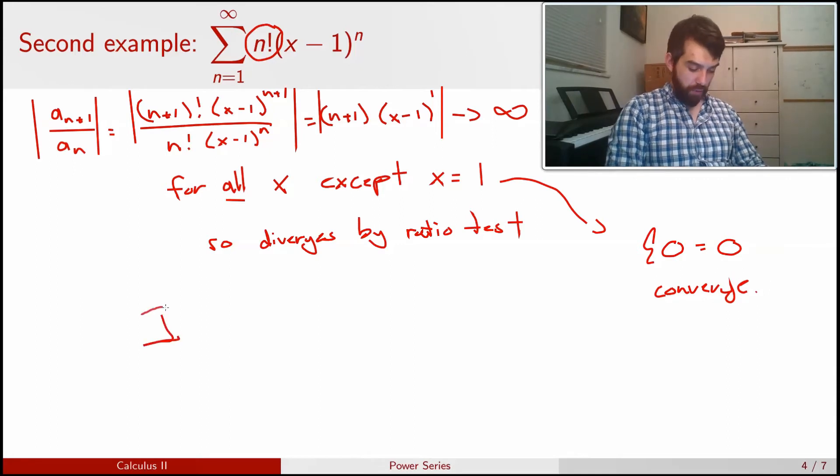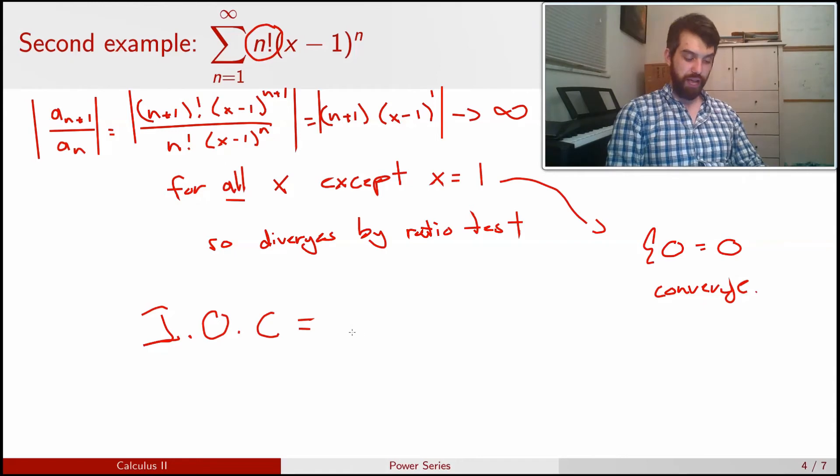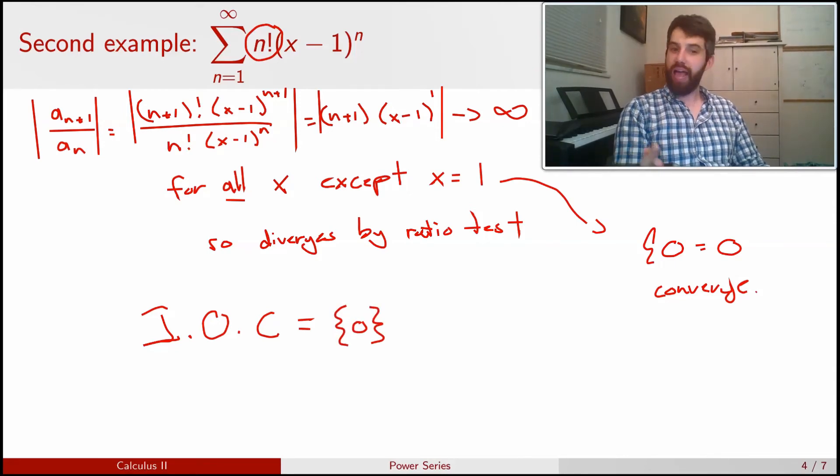So now if I want to write down what the interval of convergence is going to be equal to, the only value that it converges for is just 0, and so I can write it using set notation like this. It's just the single element, x equal to 0, that is my interval.